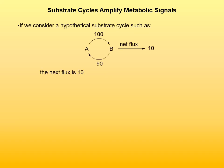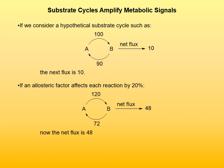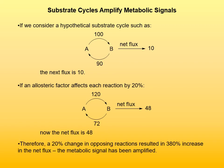Substrate cycles may also amplify metabolic signals. Consider a hypothetical substrate cycle where A is converted to B at a rate of 100, and B is converted to A at a rate of 90 — the net flux is 10. If the enzymes involved are allosterically regulated such that each is affected by 20% — the rate of conversion of A to B is increased by 20% to 120, and the rate of B to A is decreased by 20% to 72 — then the net flux is 48. That means only a 20% change in rates of the opposing reactions resulted in a 380% increase in net flux. So the metabolic signal has been amplified.